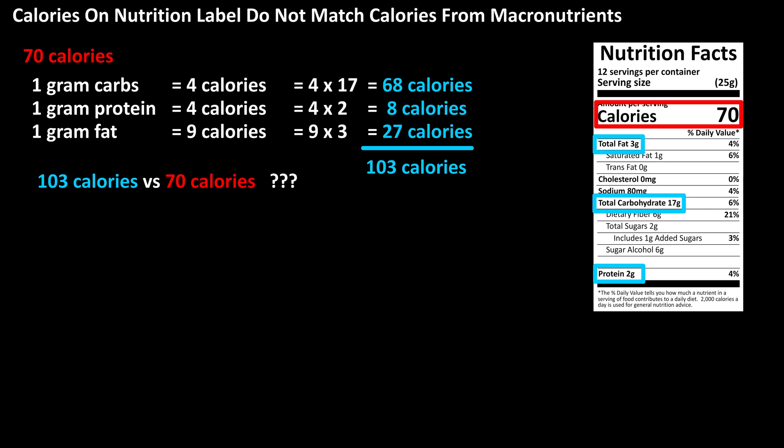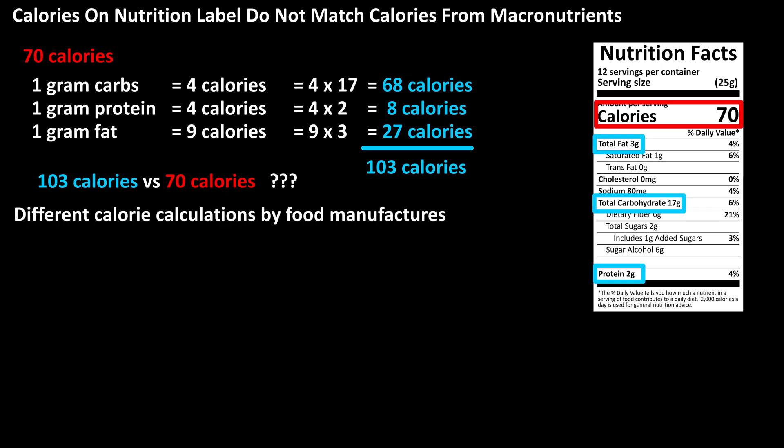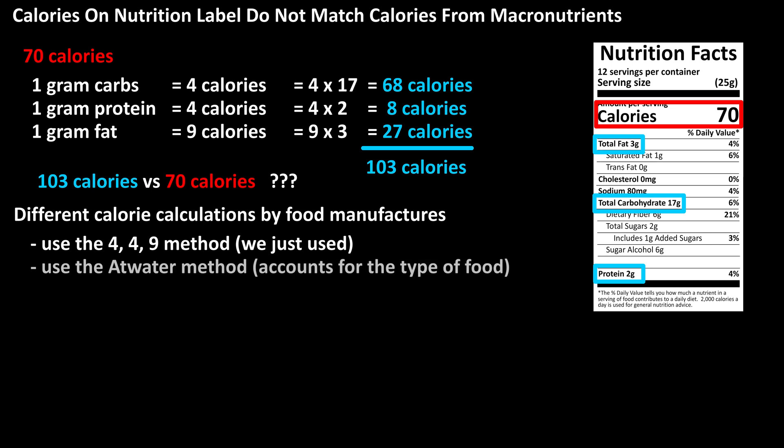To answer this question, let's start with calorie calculations by food manufacturers. In the U.S., there are different methods that can be used and some adjustments that companies can make. The first is the 4-4-9 method, which we just did the calculation for. The second method is the Atwater method, which uses an Atwater table. This takes into account the food type when assigning calories to carbs, protein, and fats. I'll put a link in the description box below to an Atwater table.